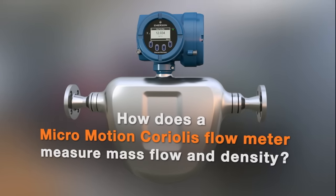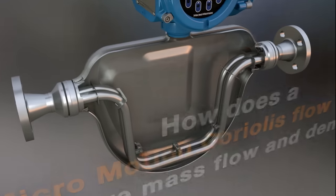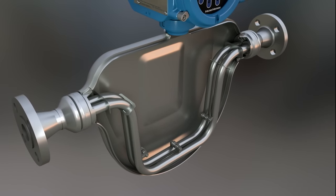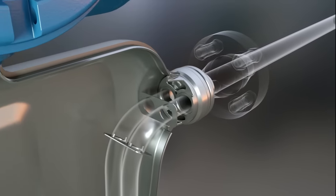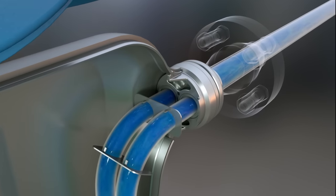How does a Micromotion Coriolis flow meter measure mass flow and density? The flow meter has dual parallel flow tubes. When the process fluid enters the sensor, it is split. Half of the fluid passes through each tube.